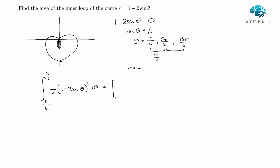So now we need to actually square that out and integrate. So we've got one half, 1 minus 4 sine of theta plus 4 sine squared of theta, d theta.